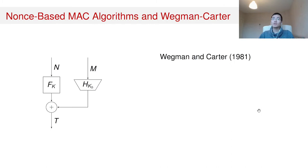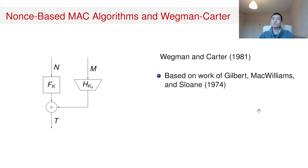The story of nonce-based MAC algorithms starts with the work of Wegman and Carter in 1981, where they process the message with the universal hash function and the input nonce with the function f. They then XOR the output of the universal hash function with the output of function f to generate the output tag of the construction. Their work is built on the early work of Gilbert, MacMillan, and Sloan in 1974.